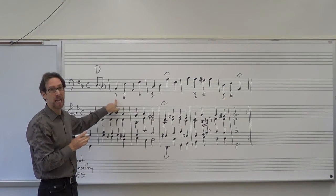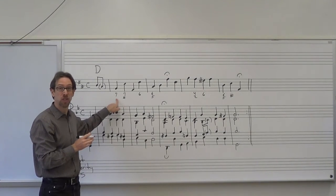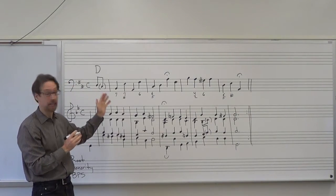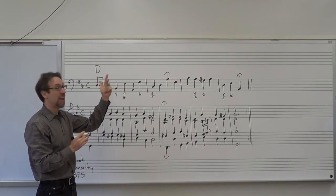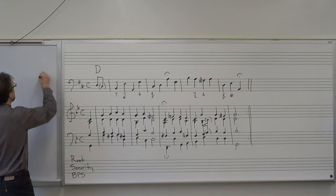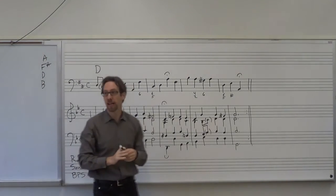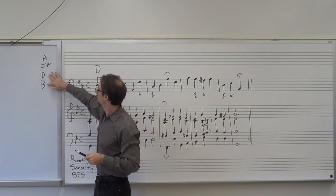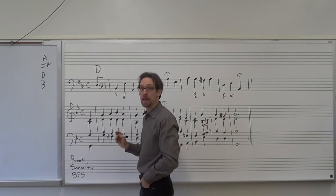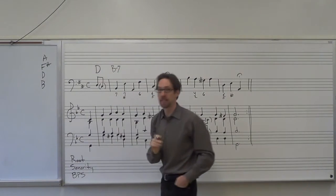The next chord we analyze is this B natural, which has a 7. That means root position 7th chord. We get the notes by using the rest of the notes in the key: B, D, F sharp, A. Analyzing that: minor 3rd, perfect 5th, minor 7th — that makes it a minor 7 chord. So we write B with a minus sign and 7th.